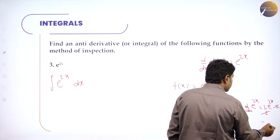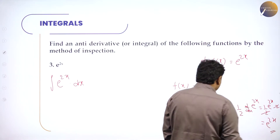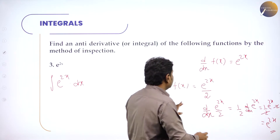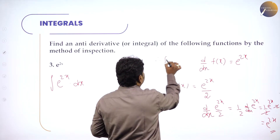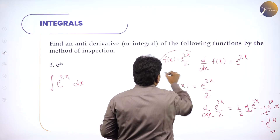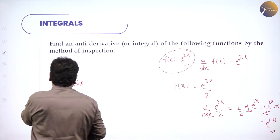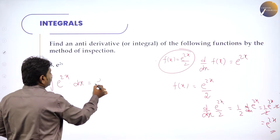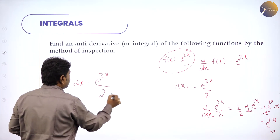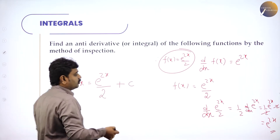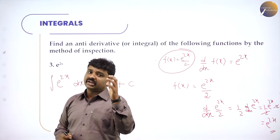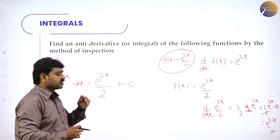So d/dx of e^(2x) by 2 gives e^(2x). Therefore f(x) is e^(2x) by 2. So the integration of e^(2x) dx is e^(2x) by 2, plus C for the indefinite integral — because differentiation of C is always zero. Always for indefinite integrals, even in the formula, put plus C.